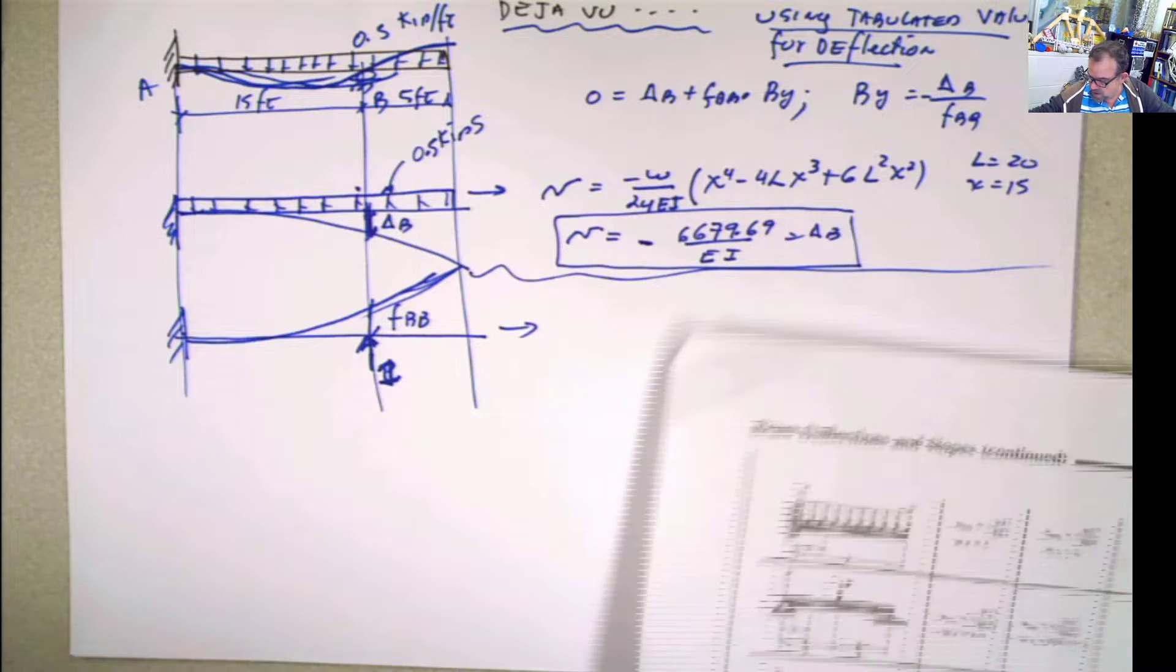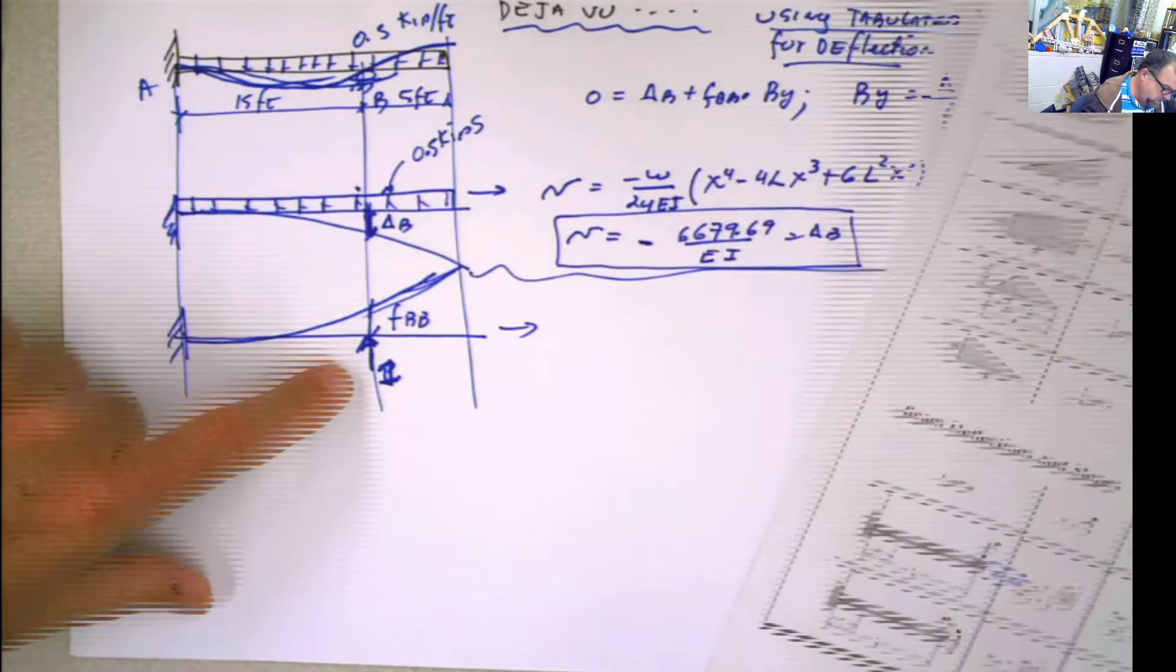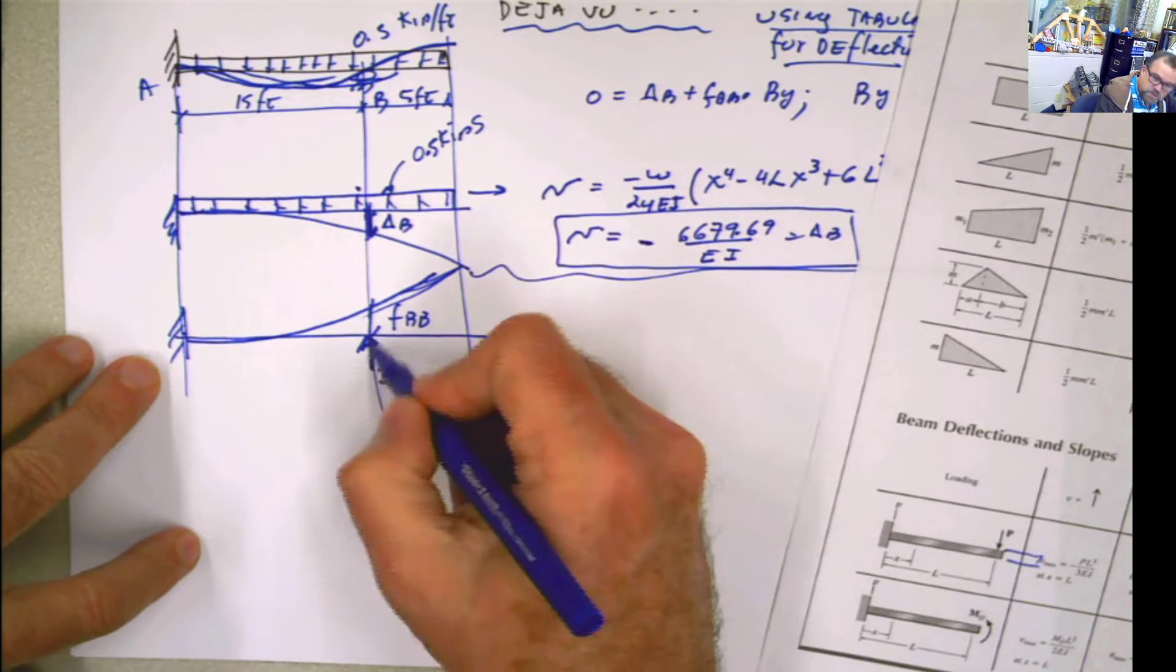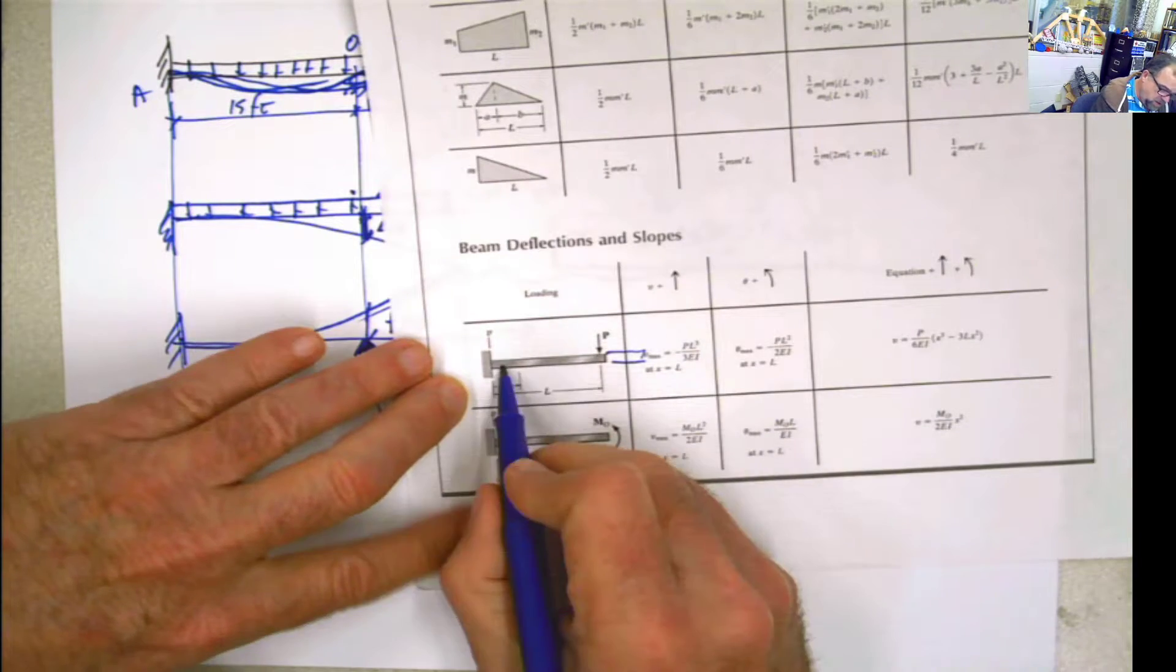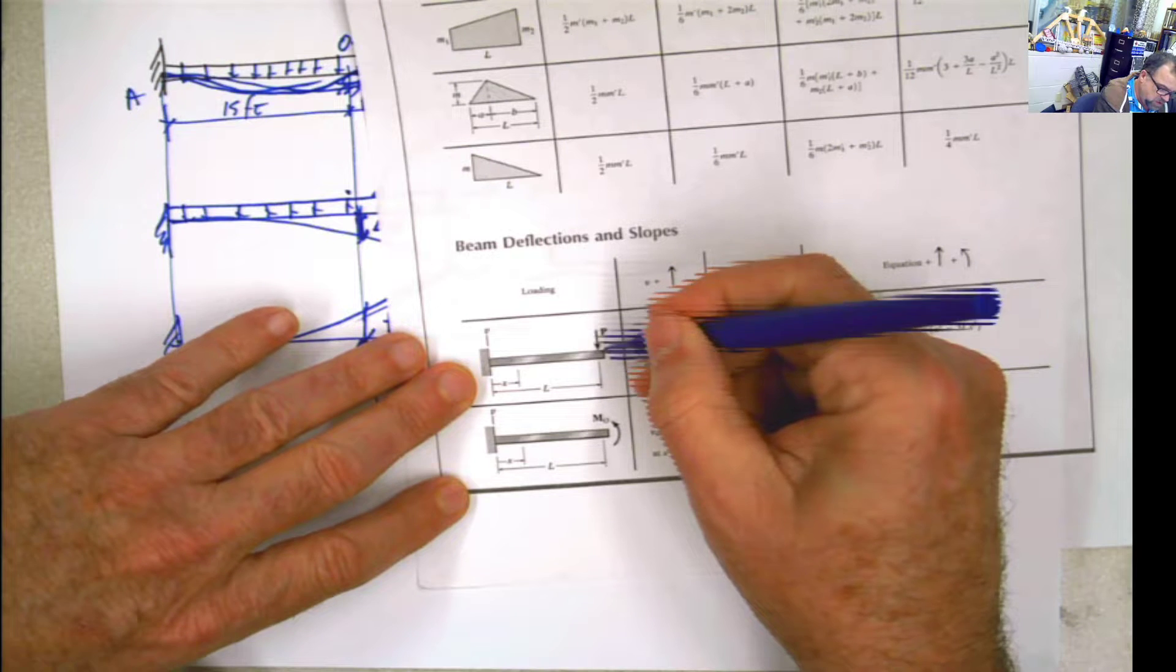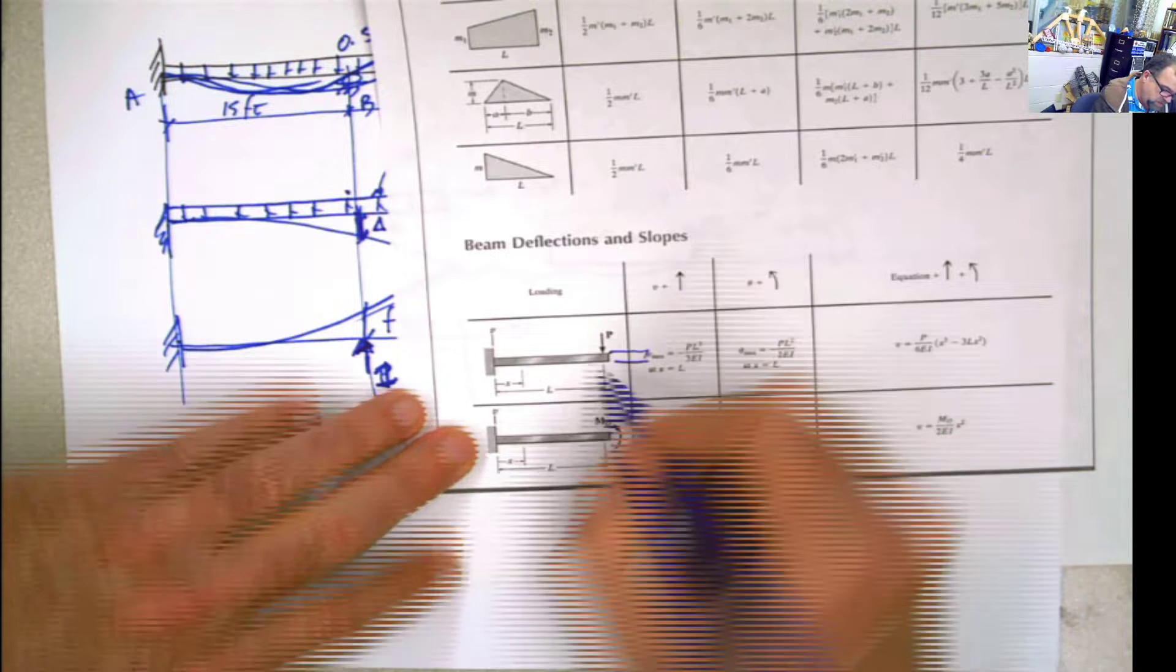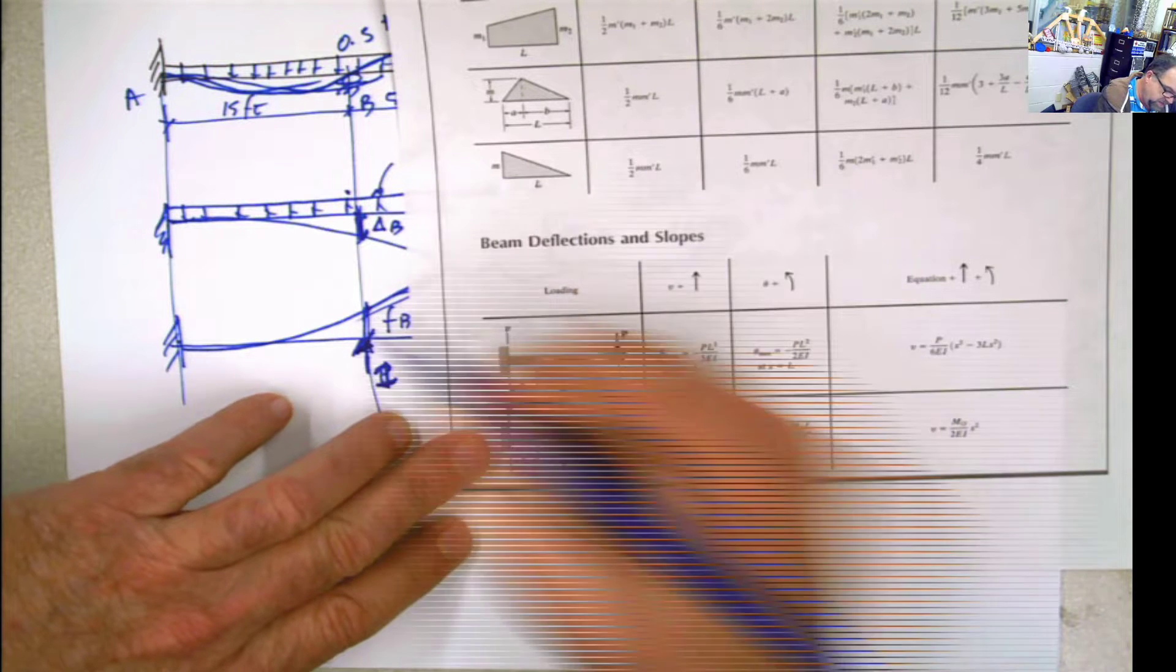Now, the other chart, where is the other chart? The other chart is this one. Because look what you have here. What you have here is basically a cantilever beam with a force pointing it up in this direction. Now, that resembles a lot to this one. But the load is applied from the top. Well, if the load is applied from the top, I know the deflection is going to come down. But if the load is applied from the bottom, the deflection is going to go up as I have it there.